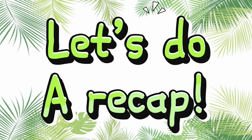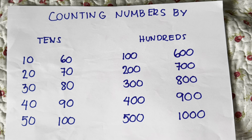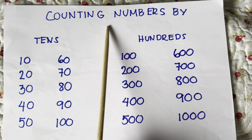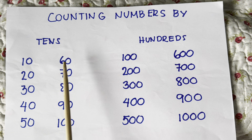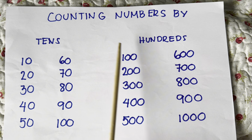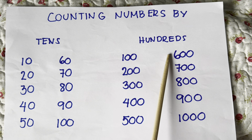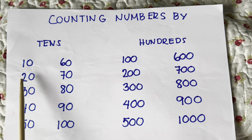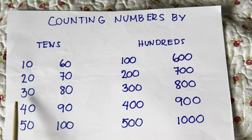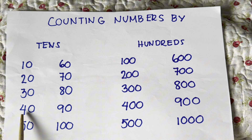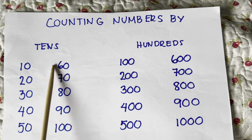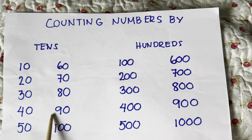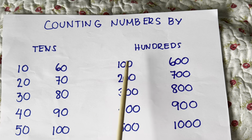Let's do a recap. Let's start counting numbers by tens and hundreds. Let's try with tens first. Ten, twenty, thirty, forty, fifty, sixty, seventy, eighty, ninety, one hundred.